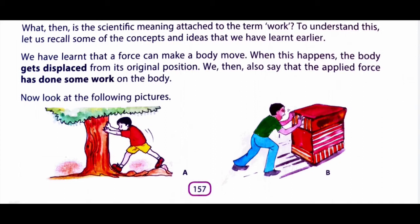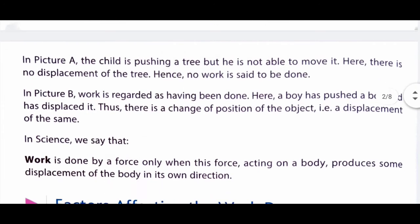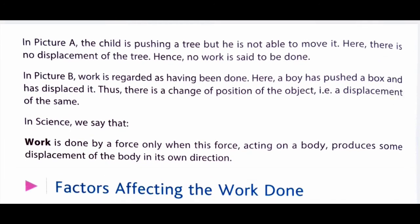In the first figure, a child pushes a tree with full force but the tree does not move from its place at all. Aise condition mein work done zero hoga. But in Figure B, a child pushes a box and displaces it from one position to another position. Us condition mein there is some work done. So, work is done by a force only when this force acting on a body produces some displacement of the body in its own direction.